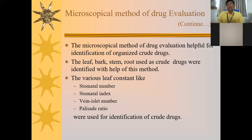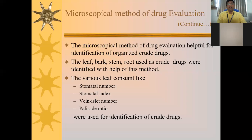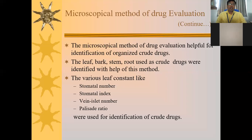The various leaf constants are important for microscopical drug evaluation. They are called constants because wherever you go in the universe, the stomatal number of a leaf remains constant. There are four leaf constants: stomatal number, stomatal index, vein islet number, and palisade ratio — all used for the identification of crude drugs.